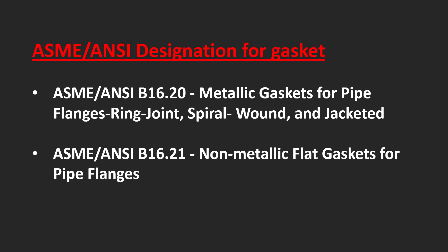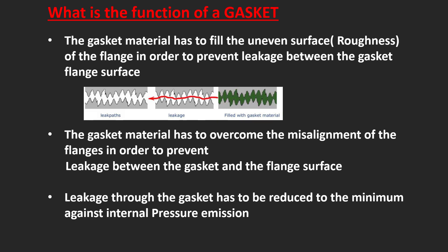ANSI designations for gaskets: ANSI B16.20 covers Metallic Gaskets for pipe flanges, including Ring Joint, Spiral Wound, and Jacketed types. ANSI B16.21 covers Non-Metallic Flat Gaskets for pipe flanges. The roughness of the flange must be considered in order to prevent leakage between the gasket and the flange surface.